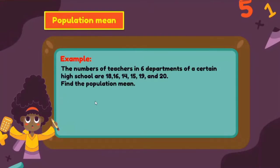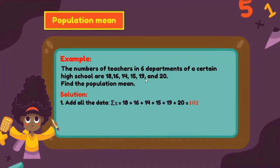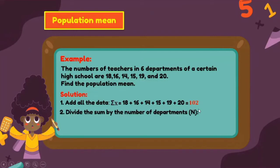Example: the numbers of teachers in six departments of a certain high school are 18, 16, 14, 15, 19, and 20. Find the population mean. Step 1: add all the data — 18 + 16 + 14 + 15 + 19 + 20 = 102. Step 2: divide by the number of departments, which is 6. So 102 ÷ 6 = 17.